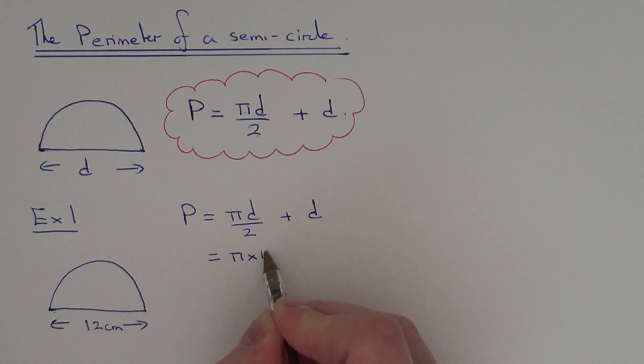We get pi times 12 divided by 2, and then we have to add on the 12 because we want the distance around the whole of the semicircle.